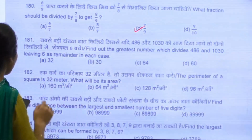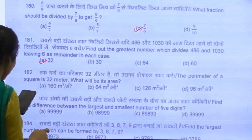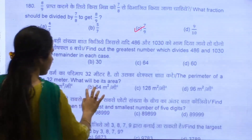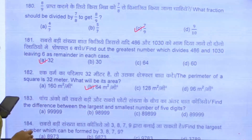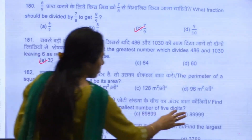181, we have A. 182, we have B. Coming to 183, we have D option as our answer.